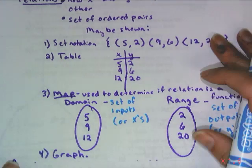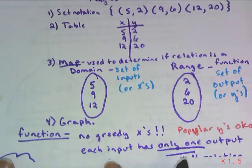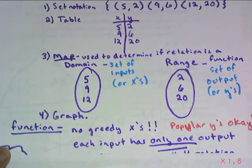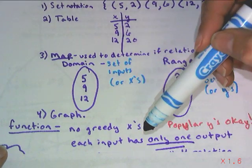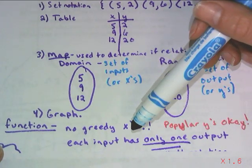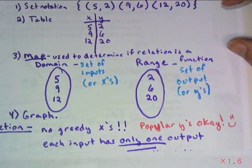But a function is defined as each input having only one output. So another way to think about this is you cannot have a greedy x, but it's okay to have a popular y. So no greedy x's, popular y's, okay.